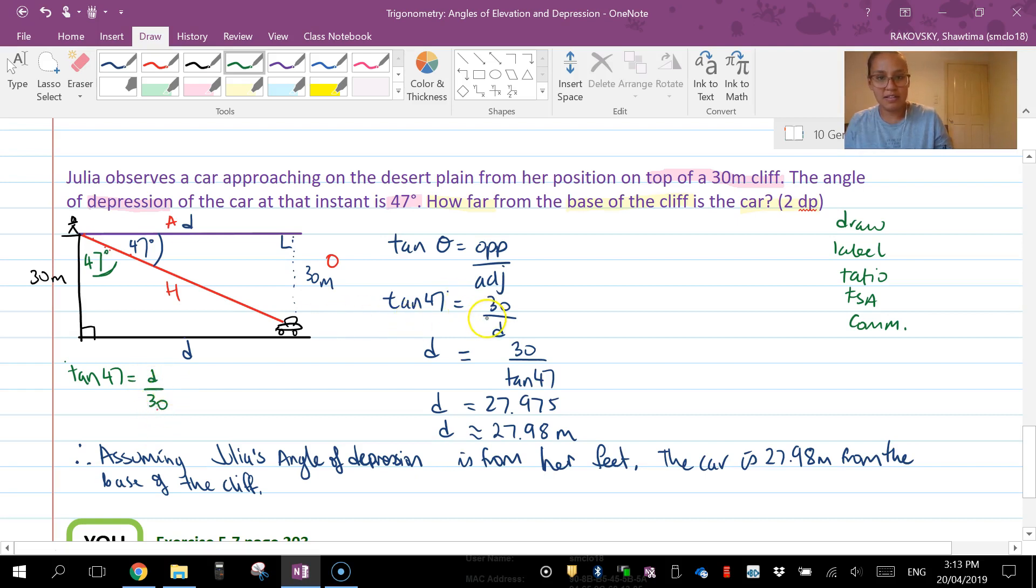Now straight away that's different to this one and you're going to get a different answer. So be very mindful of that. If you would like to use your 47 degrees and this triangle here for whatever reason, use your alternate angle and put your 47 down here because those two are equal.